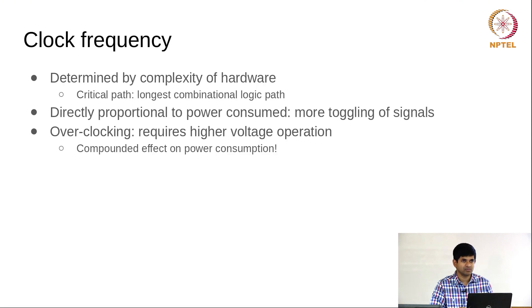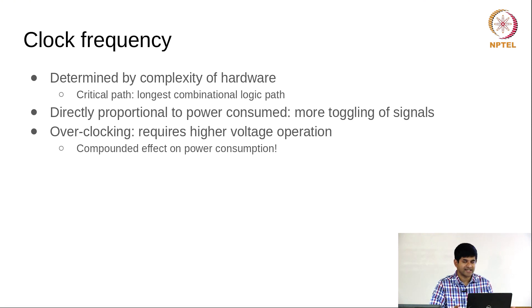Clock frequency refers to the maximum speed at which a system can operate. It is typically determined by the complexity of the hardware — that is the critical path — which is the longest combinational logic path through the gates that build up the circuit. The higher the clock frequency, the more power is consumed in general, partly because when you are toggling the clock more often, other signals are also toggling at a rate proportional to the clock.